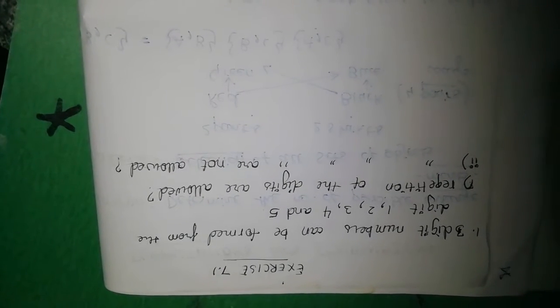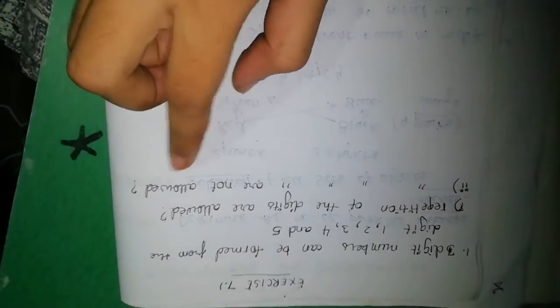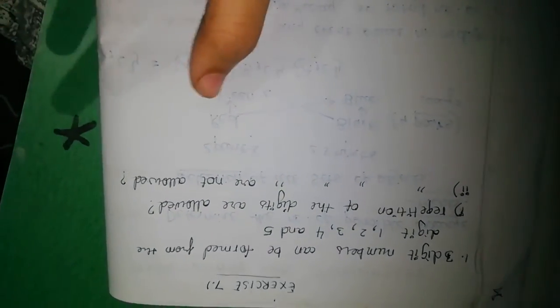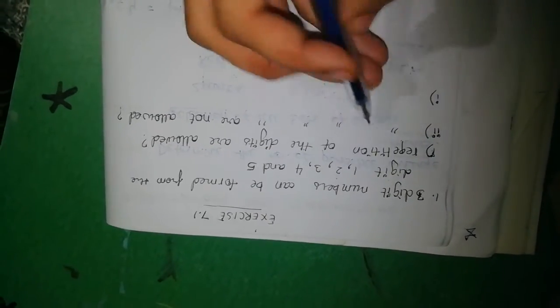The question is: how many three-digit numbers can be formed from the digits 1, 2, 3, 4, and 5? We need to find three-digit numbers with these digits. They have given two conditions: repetition of the digits is allowed, and repetition of the digits is not allowed.